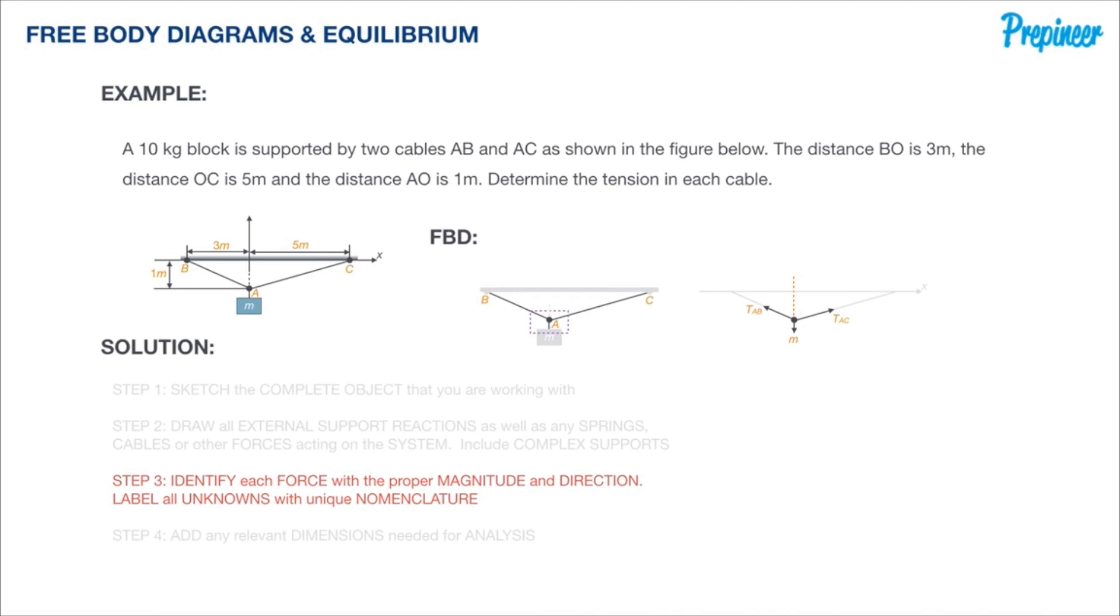Step three is to identify each force with the proper magnitude and direction and label all those unknowns with unique nomenclature. I've already identified the two tensions as well as the force acting downward at point A, so this step naturally played itself out already.